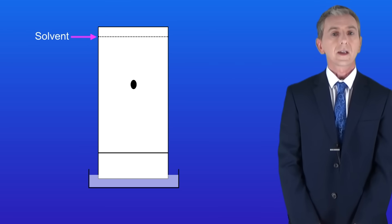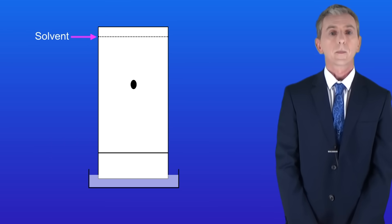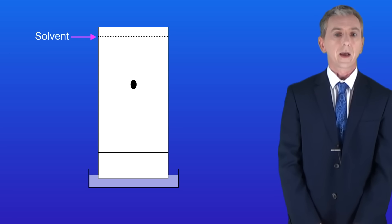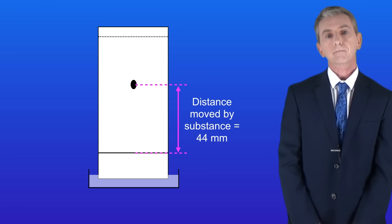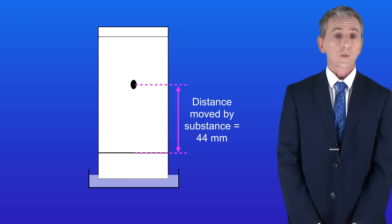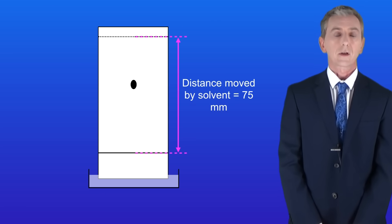Here's where the solvent moved to and it's really important that we know that. So the first thing we need to do is measure the distance moved by the unknown chemical. To do that we measure from the pencil line to the center of the spot. So in this example the substance moves a distance of 44 millimeters. We then measure the distance moved by the solvent, in this case 75 millimeters.